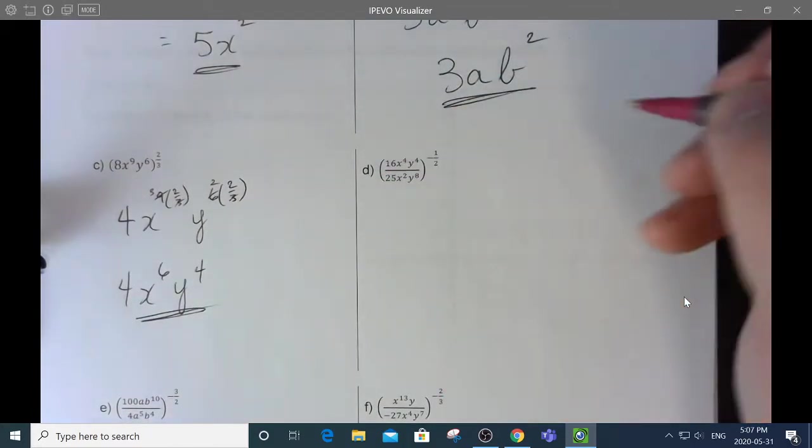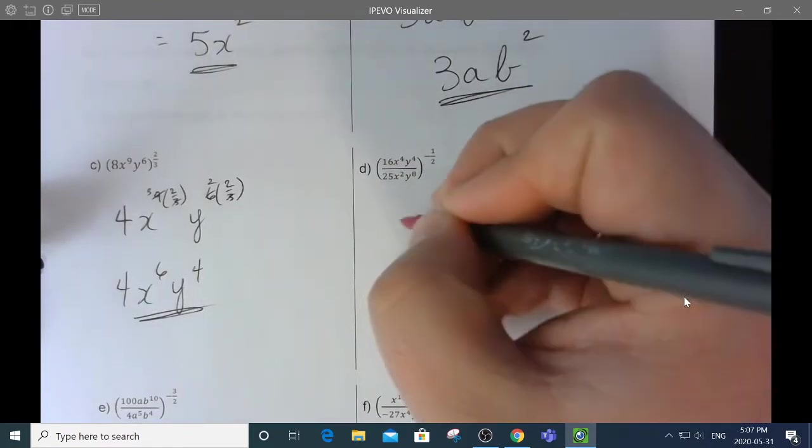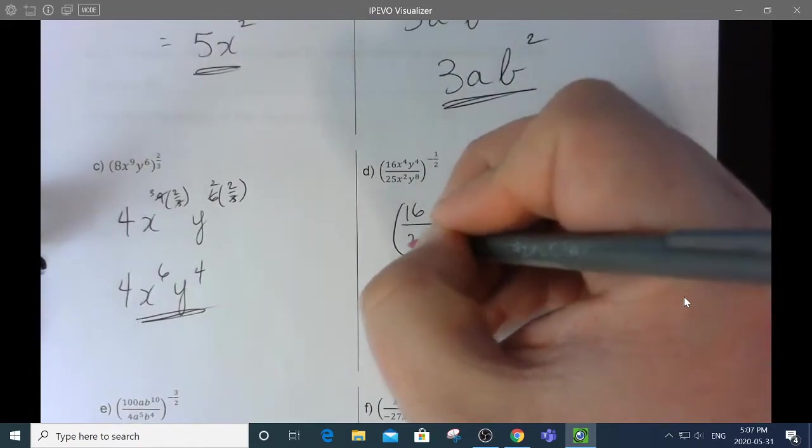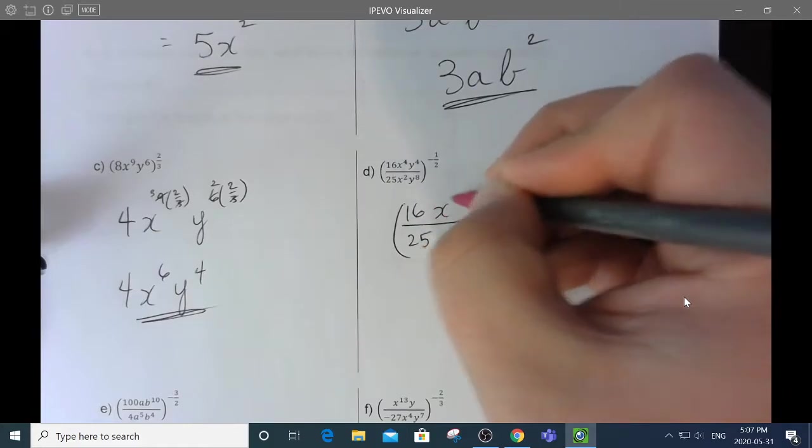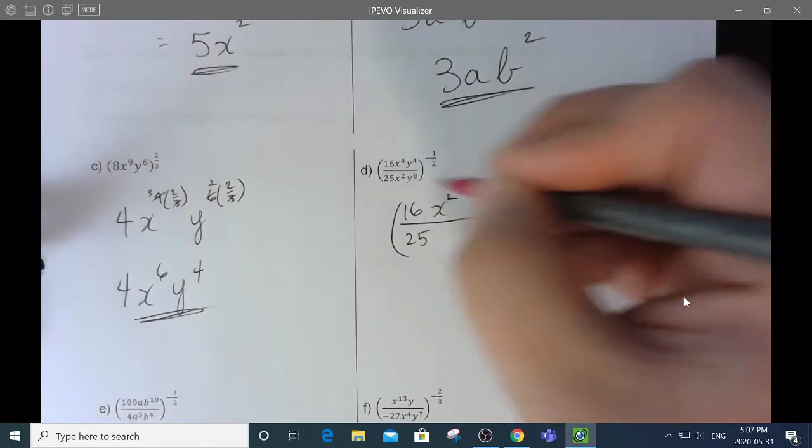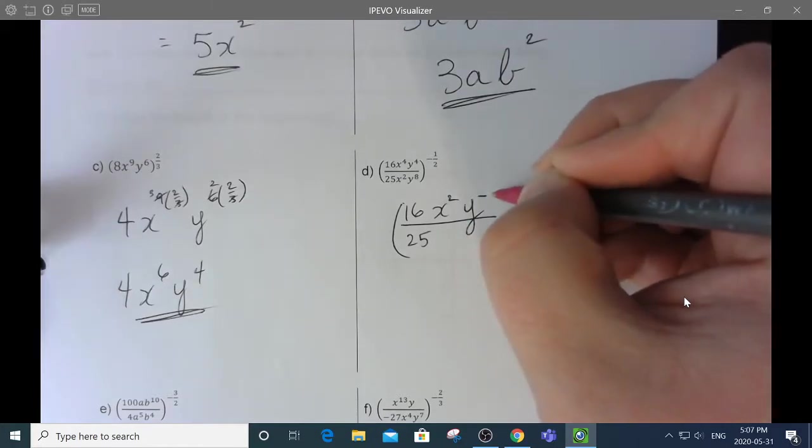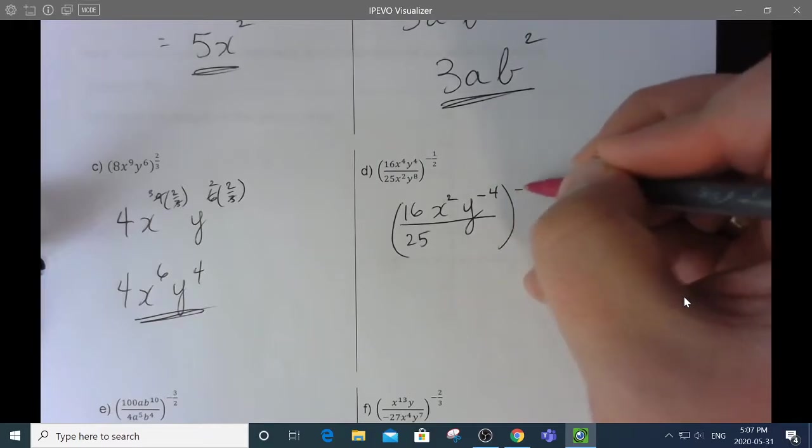For this one, I think I'm going to simplify inside the bracket and then deal with the outside of the bracket. So, 16 25ths doesn't have any common factors. So, it's still 16 and 25. But x to the 4 minus 2 is x to the 2. And y to the 4 minus 8 is y to the negative 4. 4 minus 8 is negative 4. And all this is to the negative 1 half.